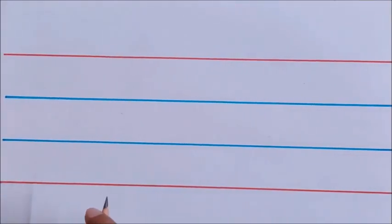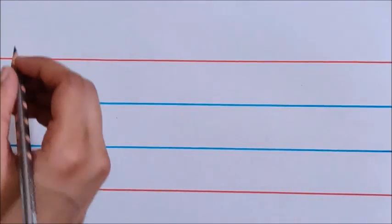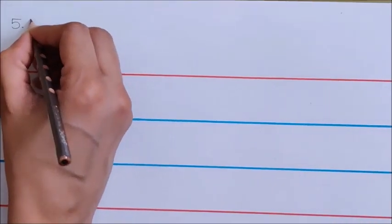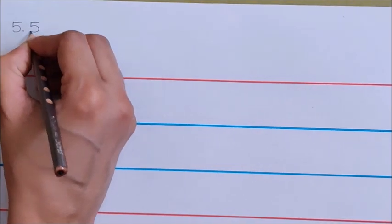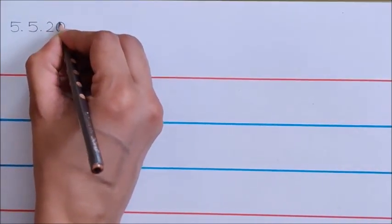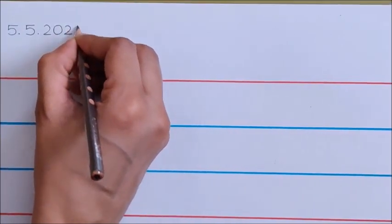Now let us see the formation of letter S. But before that we have to write today's date. Today is 5th May 2020. So let us write the date: 5 dot 5 dot 20 20.